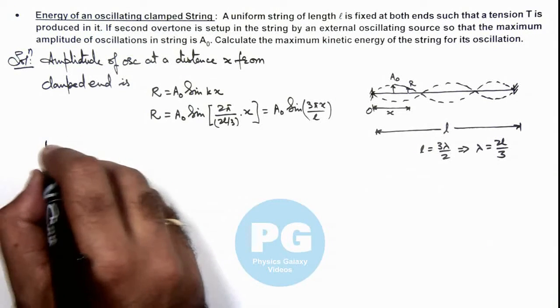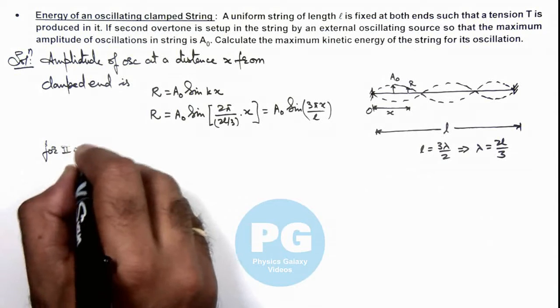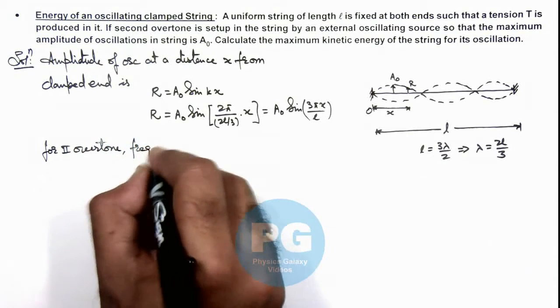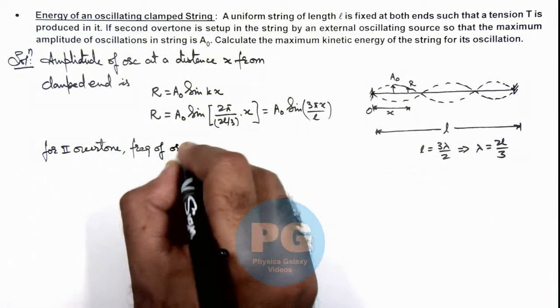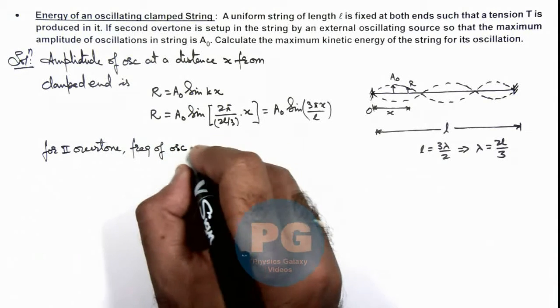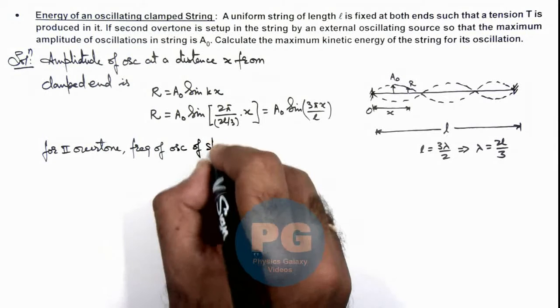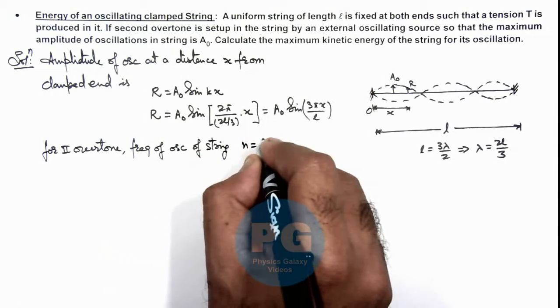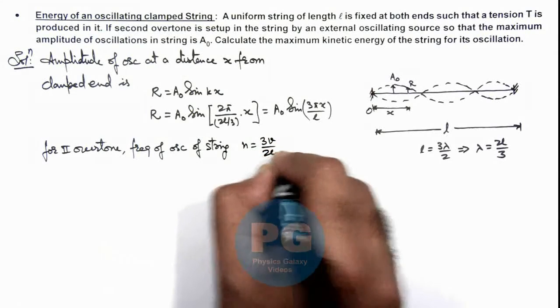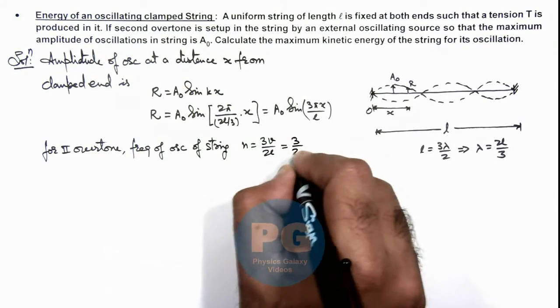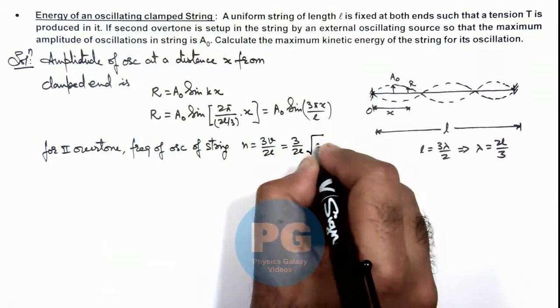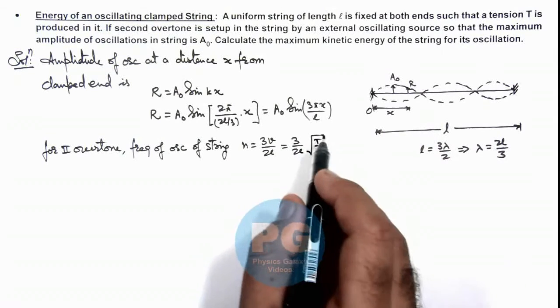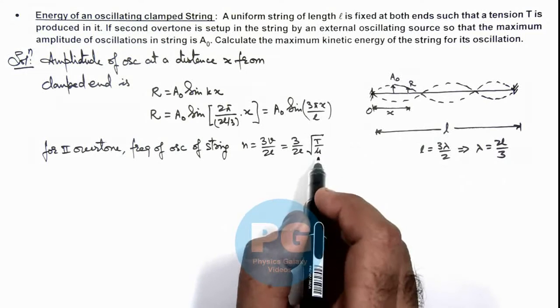And for second overtone, frequency of oscillations of string if we calculate, this frequency of oscillation we can write as n = 3v/(2l) which we can write as (3/2l)√(T/μ). The wave velocity we can write as square root of the ratio of tension to linear mass density.